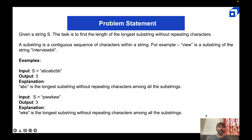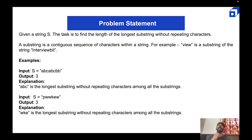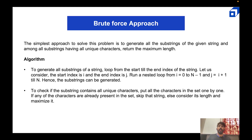A substring is a contiguous sequence of characters within a string. For example, 'view' is a substring of 'interviewbit'. Even in 'interviewbit', characters like 'i' and 't' repeat, so you'd look for the longest contiguous sequence without repetition. Given any string, we have to figure out the longest substring without any repeating characters among all possible substrings.